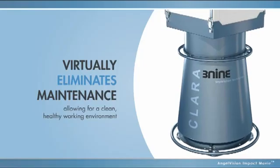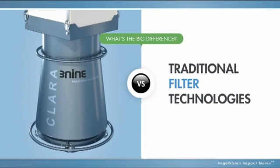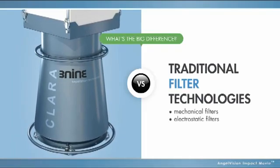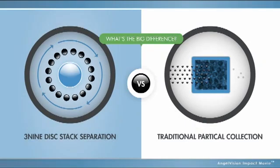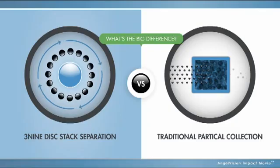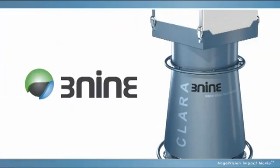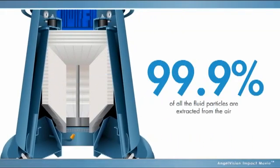There's a big difference between traditional filter technologies such as mechanical filters, electrostatic filters and rotating filters, which only collect particles, and 3.9's advanced ultra-clean separation technology. Unlike collection technologies, 3.9's patented system uses a rotating disk stack to extract 99.9% of all the fluid particles from the air down to 1 micron without filters.